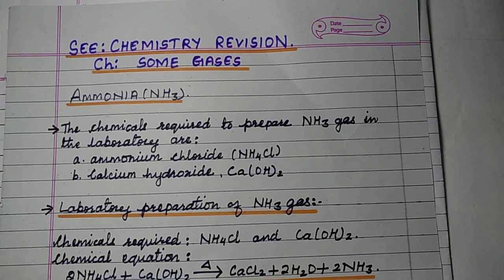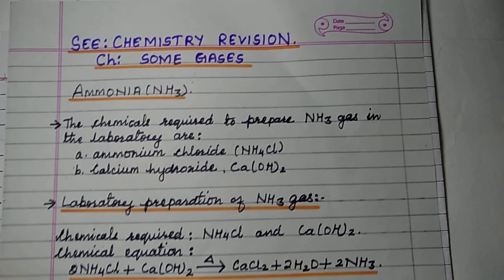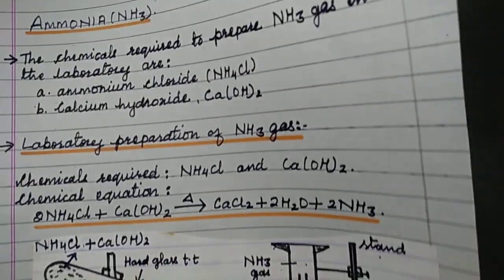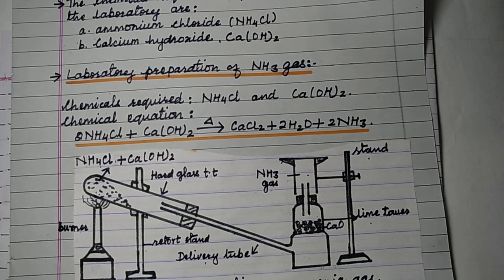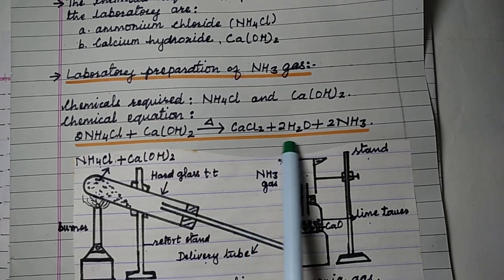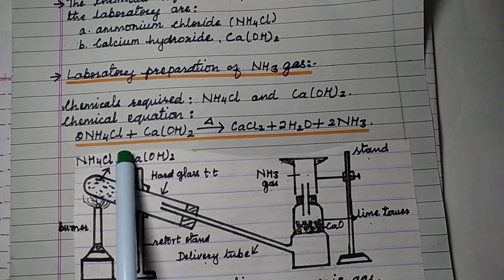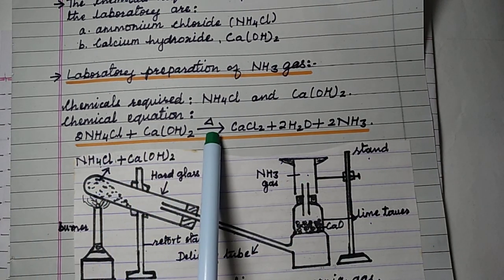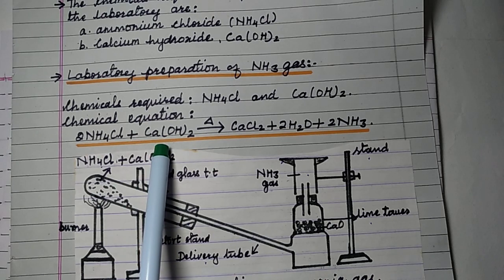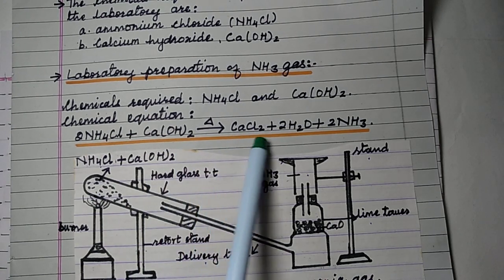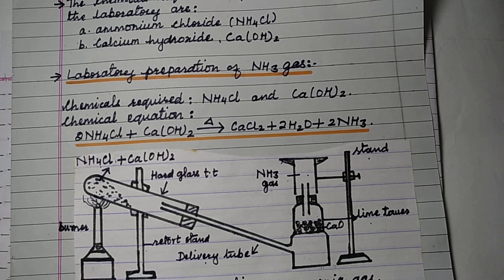Chemicals required to prepare ammonia gas in the laboratory are ammonium chloride and calcium hydroxide. The chemical equation for the laboratory preparation of ammonia gas: ammonium chloride reacts with calcium hydroxide on heating to give calcium chloride, water, and ammonia — 2NH4Cl + Ca(OH)2 → CaCl2 + 2H2O + 2NH3. This is an important chemical equation you must remember.